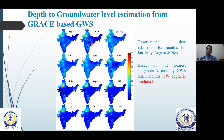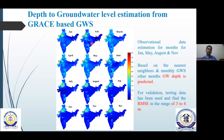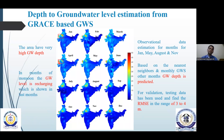Based on the nearest neighbor and monthly GWS, the depth is predicted. We have some root-mean-square error of three to four meters of inequities within the area due to the GRACE-based GWS. The outcome of groundwater level estimation shows that the area has very high groundwater depth — more than around 50 meters in some specific regions. We can see that in the month of monsoon, the groundwater level is recharging within this region, which is shown in some last months as well. So we have a high recharge within that month, giving a rising groundwater table in that specific area.